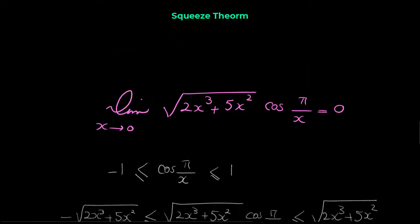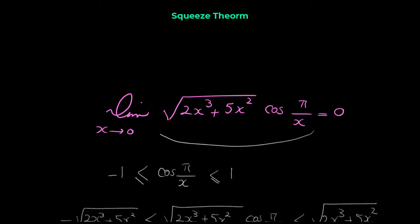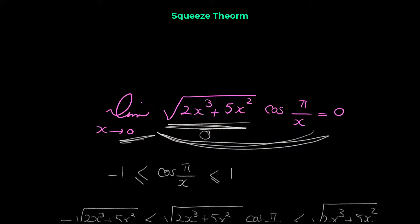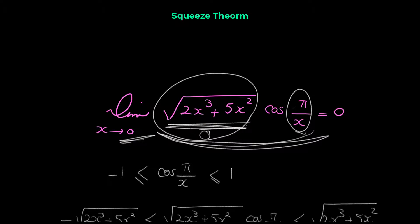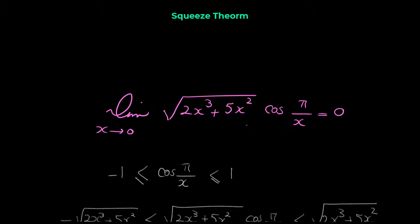Maybe you're wondering why we cannot find this limit directly by substitution. If you plug in 0, the radical part gives 0 — that's fine. But if you want to plug in 0 in cos(π/x), then π/0 is undefined. So direct substitution doesn't work here. Otherwise, if you can find the limit with direct substitution, there is no need to use the squeeze theorem.